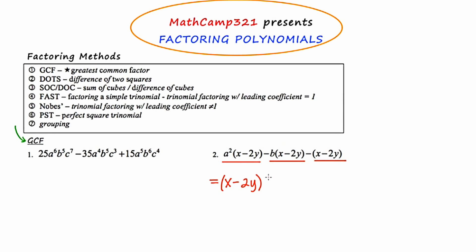When I remove it, there's going to be things that are left over. Since I removed it from three terms, there has to be three things left over when I do remove it. Take the first term and ask yourself, when I take out the x minus 2y — and something important here is that 'take out' means to divide. So if we go back to example two and think of a squared times x minus 2y divided by x minus 2y, the expression x minus 2y is going to cancel out and you're going to be left with just a squared.